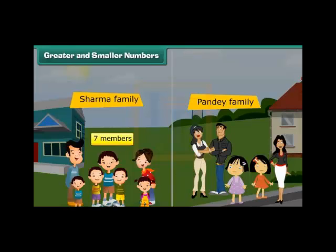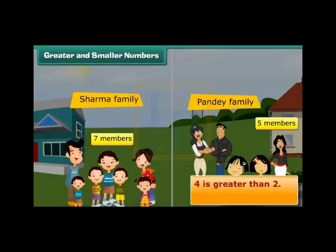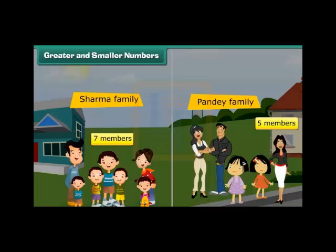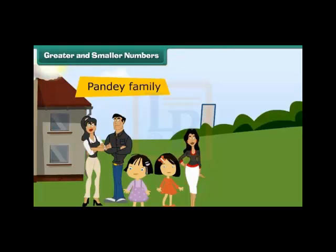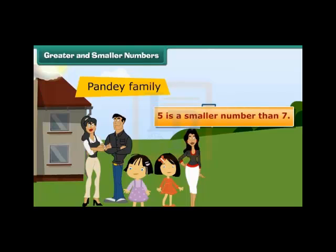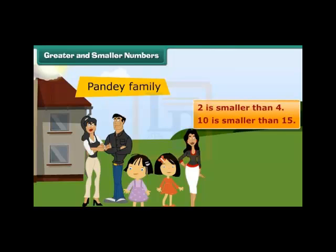Greater and smaller numbers. Recall the Sharma family with 7 and Pandey family with 5 members. Sharma family has more members, which means 7 is a greater number than 5. Numbers that come later are greater than the numbers that come before — for example, 4 is greater than 2, and 15 is greater than 10. Pandey family has fewer members, meaning 5 is a smaller number than 7. Numbers that come before are smaller than the numbers that come later — 2 is smaller than 4, and 10 is smaller than 15.